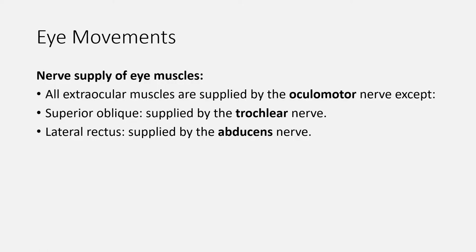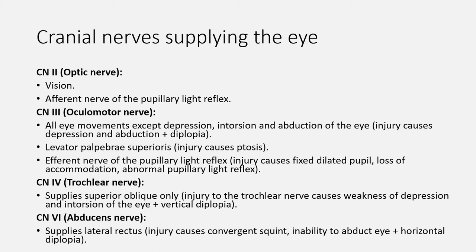For the nerve supply of the eye muscles, all extraocular muscles are supplied by the oculomotor nerve except the superior oblique muscle, which is supplied by the trochlear nerve, and the lateral rectus muscle, which is supplied by the abducens nerve. There are four cranial nerves that supply the eye: cranial nerves 2, 3, 4, and 6. Cranial nerve 2 is the optic nerve, responsible for vision and the afferent nerve of the pupillary light reflex. Cranial nerve 3 is the oculomotor nerve, responsible for all eye movements except depression, intorsion, and abduction. With injury of the oculomotor nerve, the eye becomes depressed and abducted, and diplopia occurs.